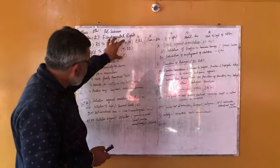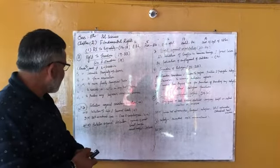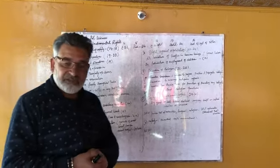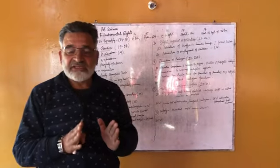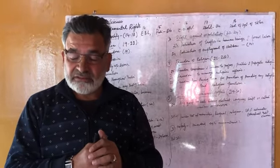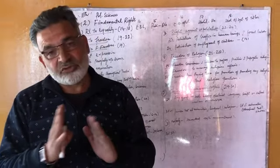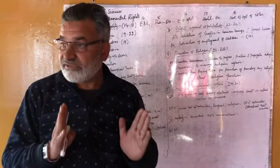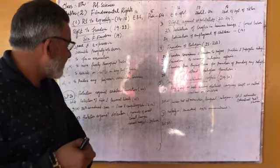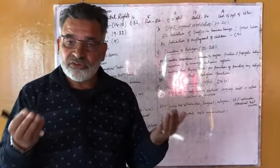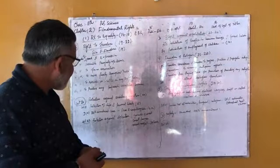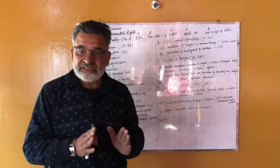Under Article 20, there is protection against arbitrary conviction. If anybody is detained or blamed for committing some kind of offense, they have protection against arbitrary conviction. They can file suits, go to courts, and know the cause why they have been detained.